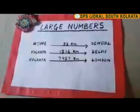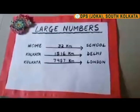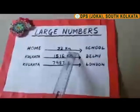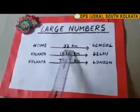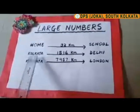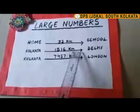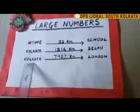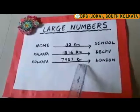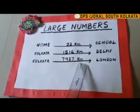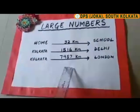We come across large numbers every day. For example, the distance from your home to school is about 32 kilometers — this is a small number. But the distance from Kolkata to Delhi is about 1,516 kilometers, and Kolkata to London is 7,957 kilometers. So we see that the numbers are increasing in order.